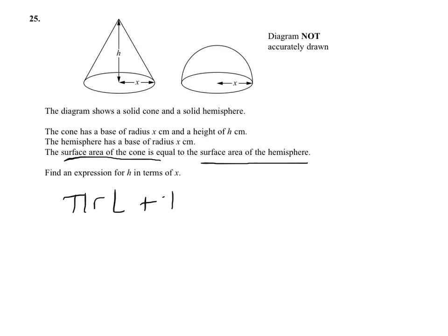The circle formula is pi r squared, but we've got pi x squared. Now we have to deal with the l. To get l in terms of h and x, you can see l is the slant height. So by Pythagoras rule, l equals the square root of h squared plus x squared.